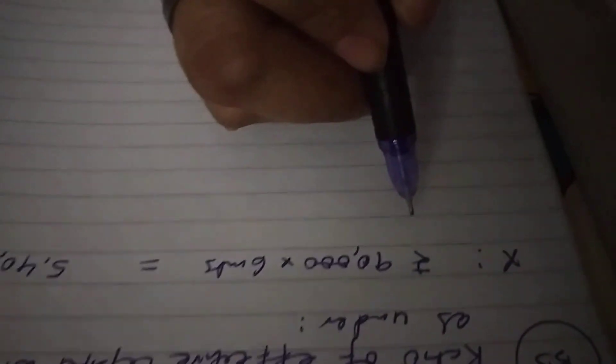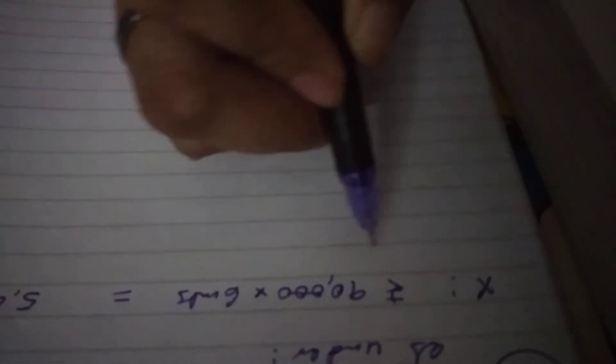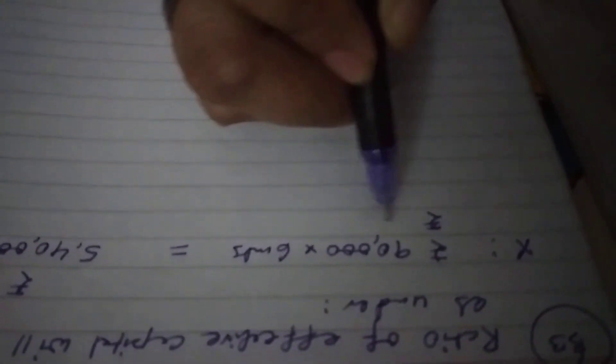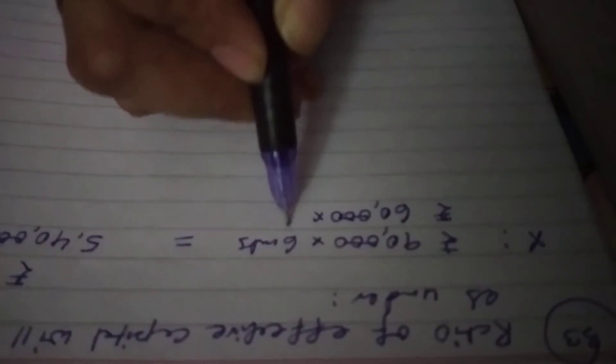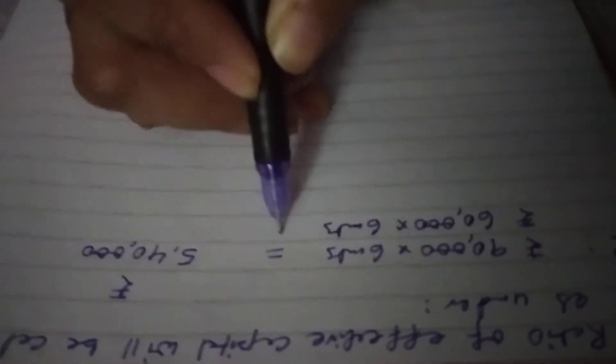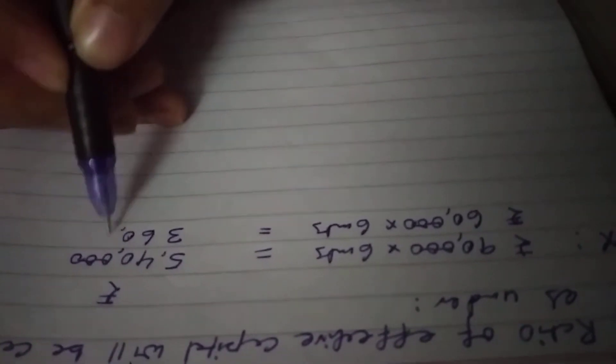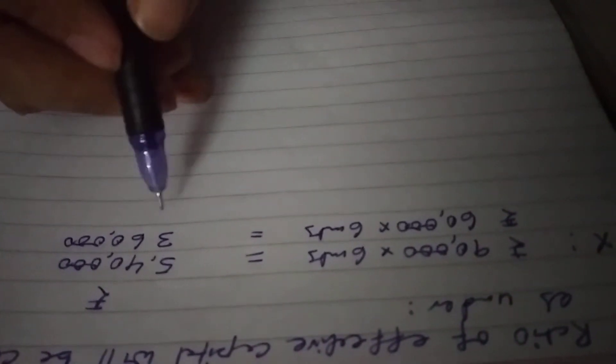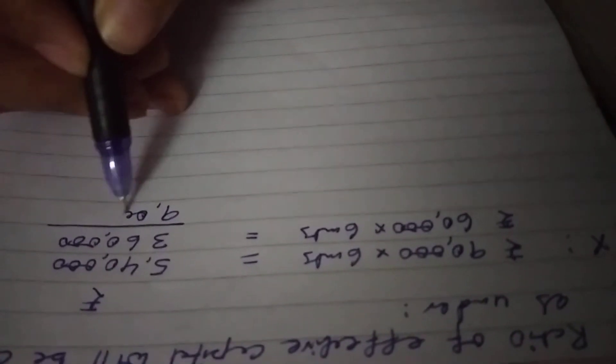But withdraws rupees 30,000 at the end, means 90,000 minus 30,000 equals 60,000 for 6 months. 60,000 into 6 months, 6 times 6 is 36, so 3,60,000. Total will be 9 lakh.